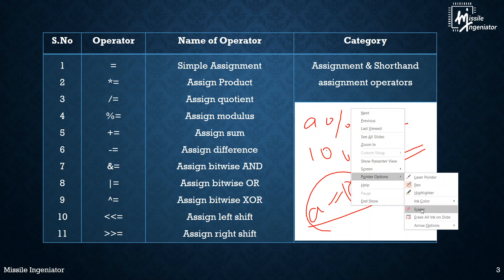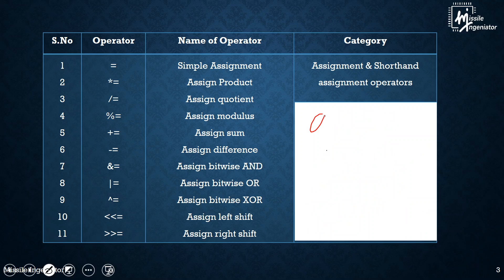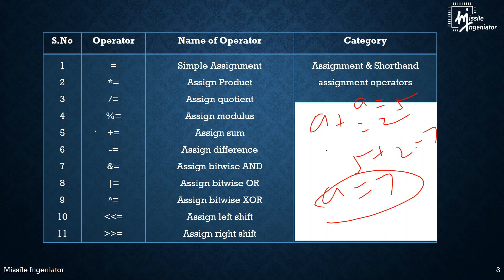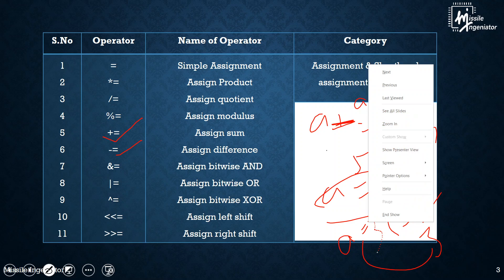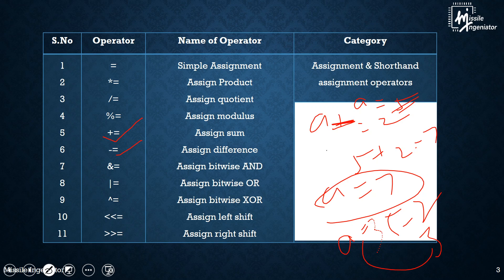The next is the addition-assign (+=). If I say A += 2 and A is already 5, then 5 + 2 = 7, so A becomes 7. The next is the minus-assign (-=). If A is 5 and I do A -= 2, then 5 - 2 = 3, so the value of A is modified to 3.